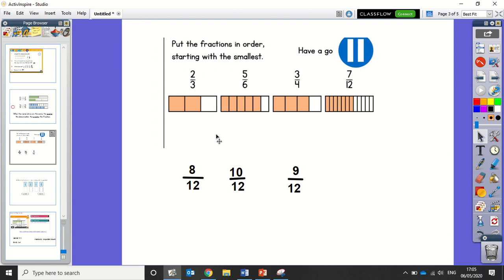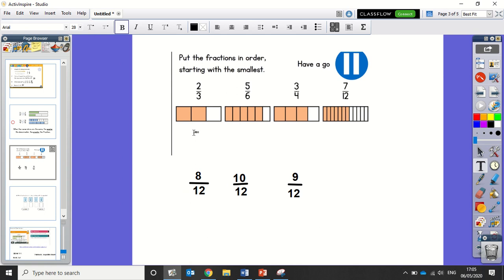So now we can put them in order, starting with the smallest. Well, 8 twelfths is the smallest, so the smallest fraction is 2 thirds.